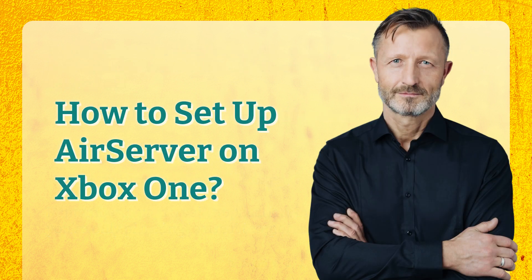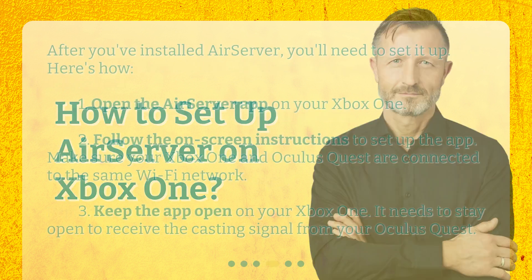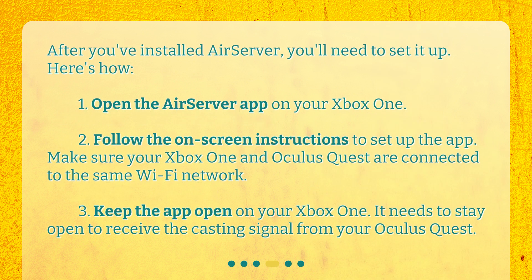How to set up AirServer on Xbox One? After you've installed AirServer, you'll need to set it up. Here's how: 1. Open the AirServer app on your Xbox One. 2. Follow the on-screen instructions to set up the app. Make sure your Xbox One and Oculus Quest are connected to the same Wi-Fi network. 3. Keep the app open on your Xbox One — it needs to stay open to receive the casting signal from your Oculus Quest.